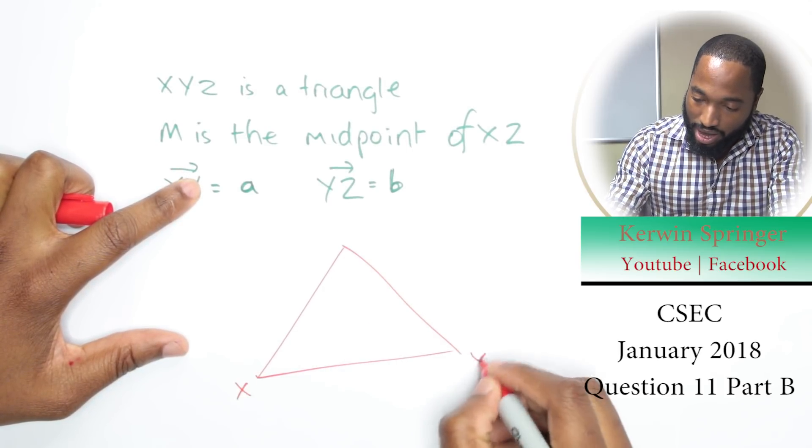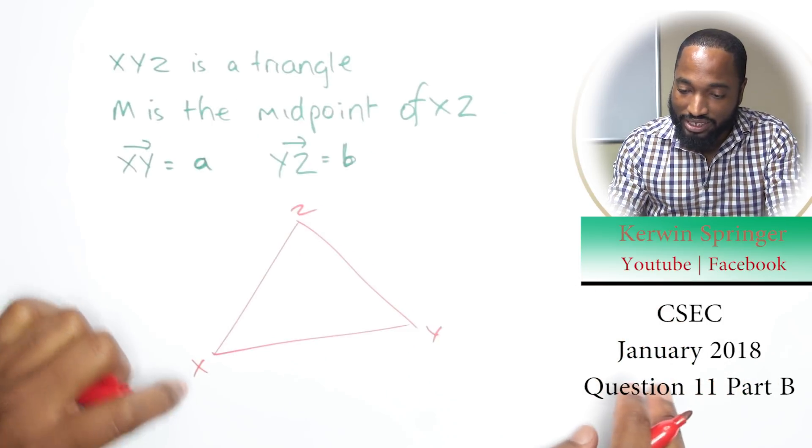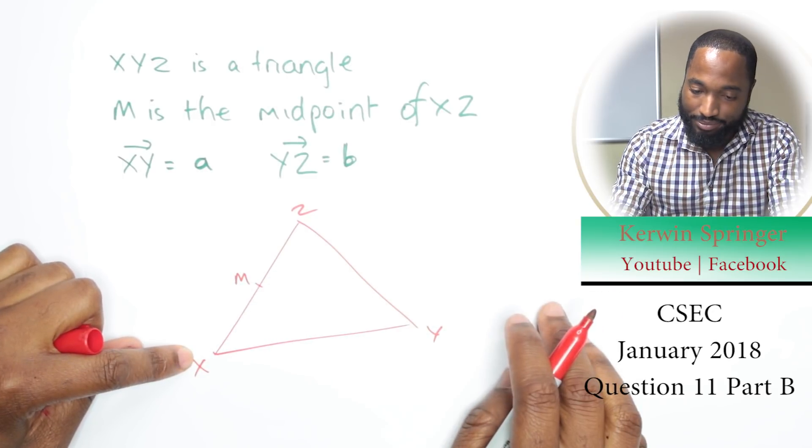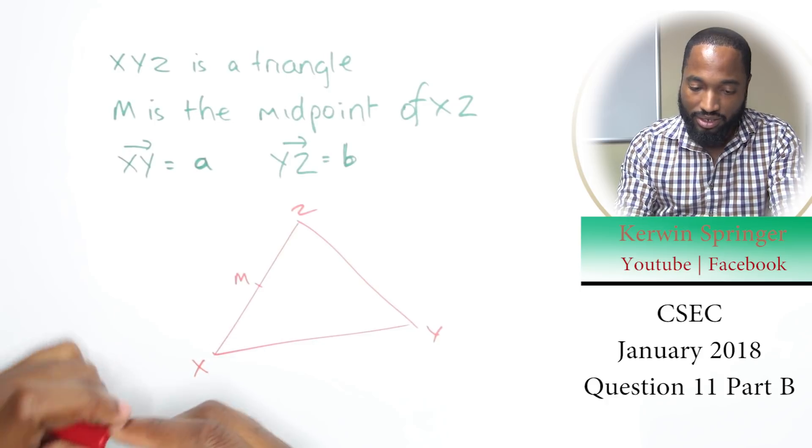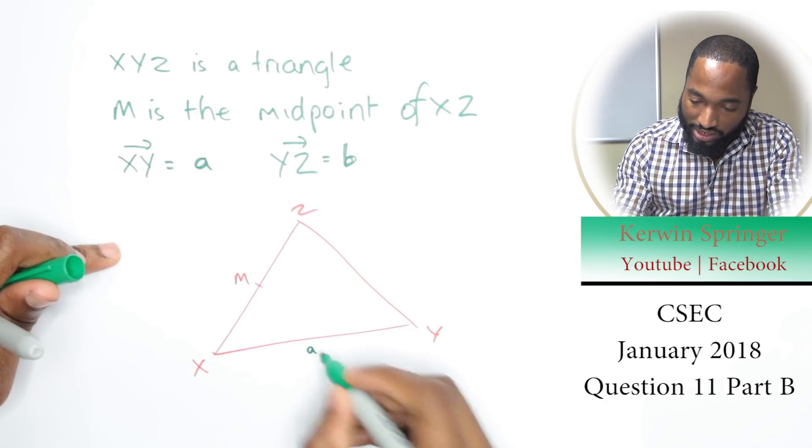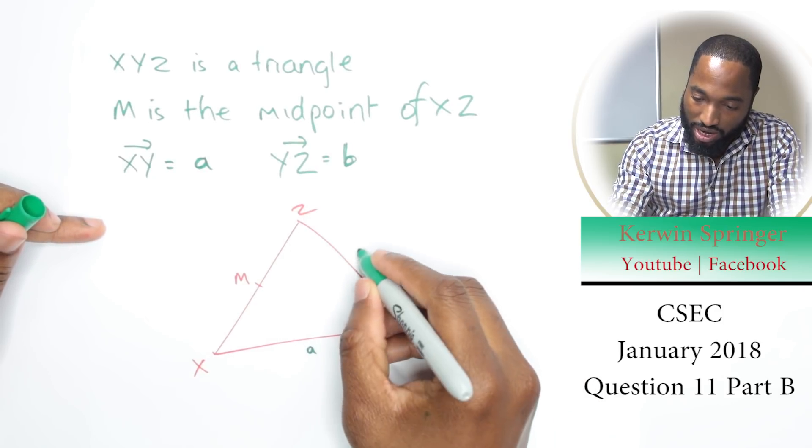X, Y, Z. M is the midpoint of XZ, so between X and Z we have M. XY is equal to a, so from X to Y I'm going to call that a. And from Y to Z, let's call that b.